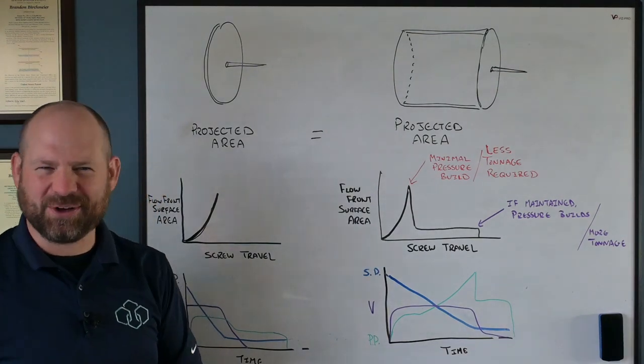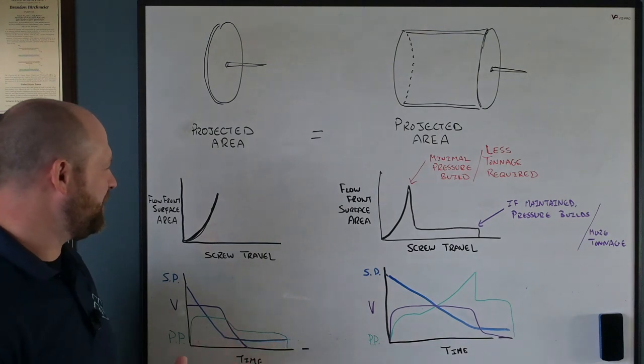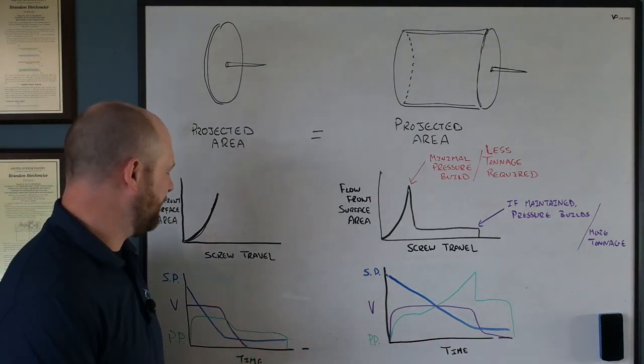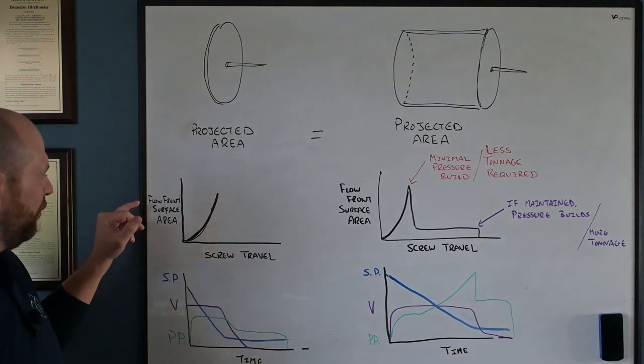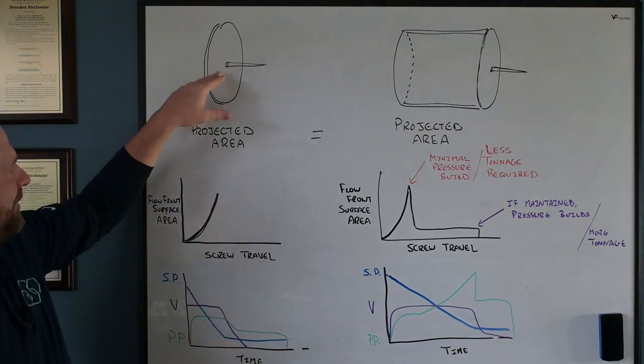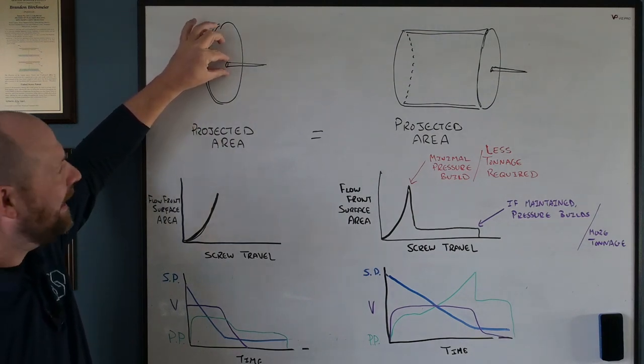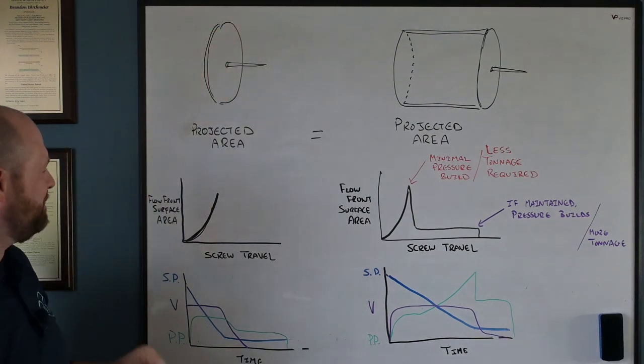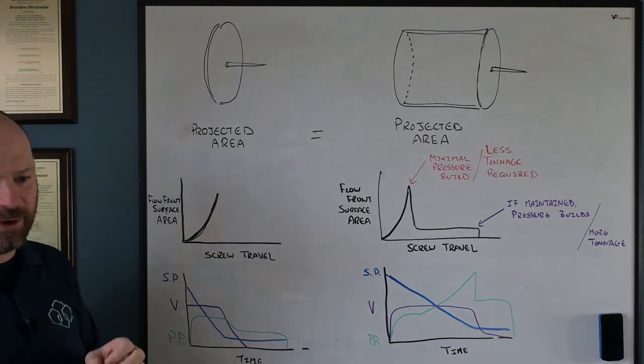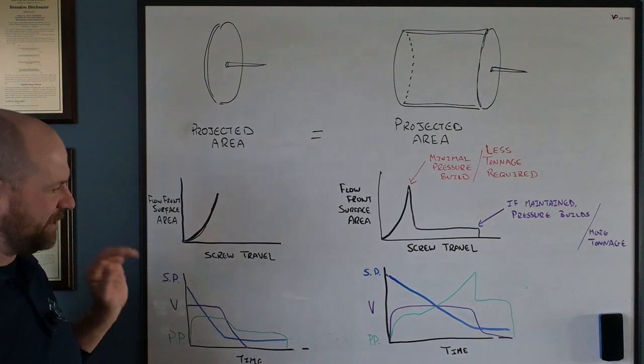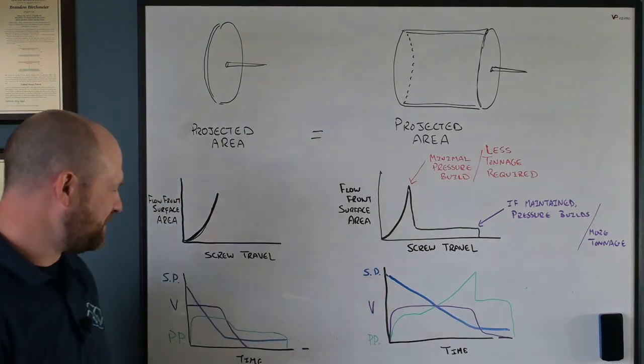One way I like to look at these relationships is something I've used—I don't know if I've seen this published anywhere—but it's looking at screw travel versus flow front surface area. In my first example here, as I go from my small circle, my gate to the outer edges of that Frisbee, my surface area, my flow front is growing exponentially, right? This exponential growth in flow front surface area as the screw moves forward in the process.